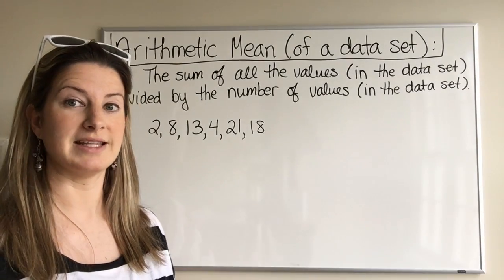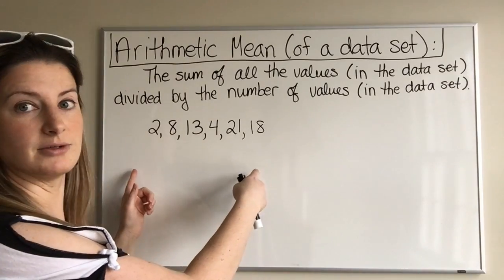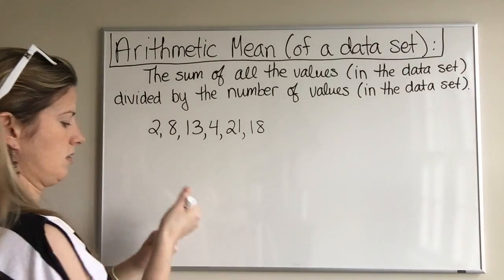Basically, if we want to calculate the arithmetic mean of this data set, we need to add up all the values, find the sum, and then divide it by the number of values that we have.